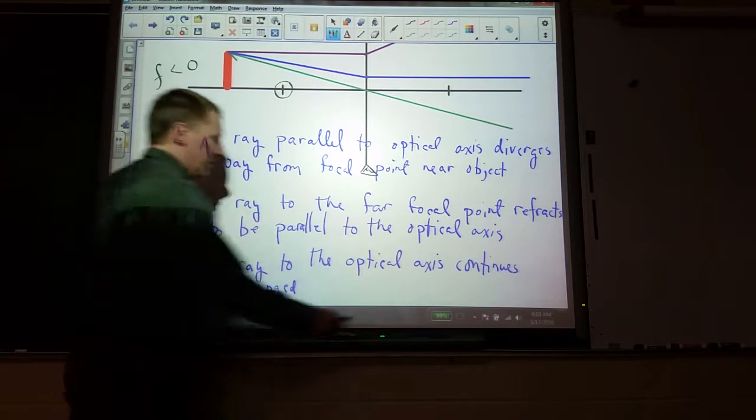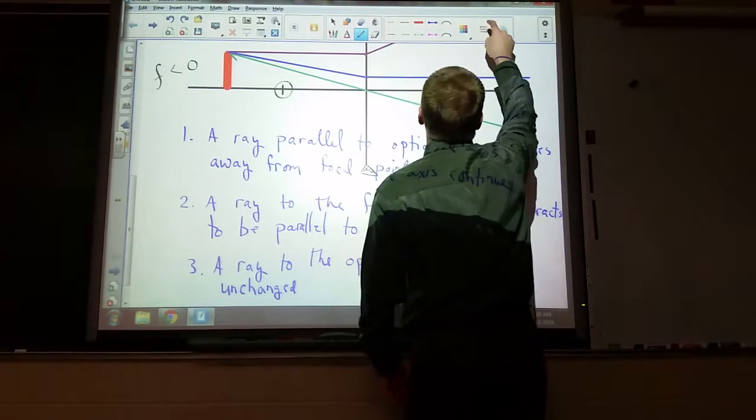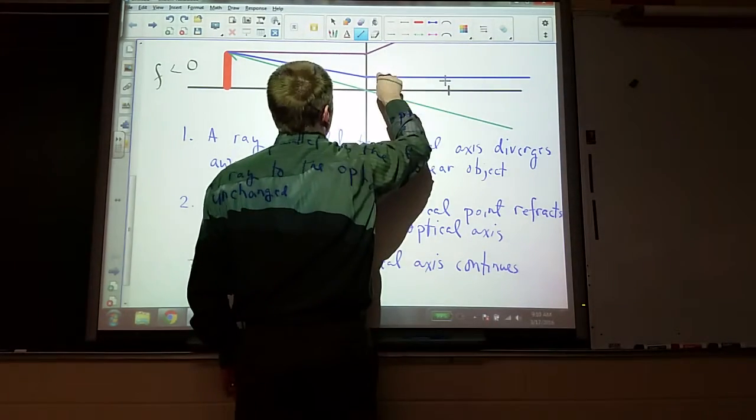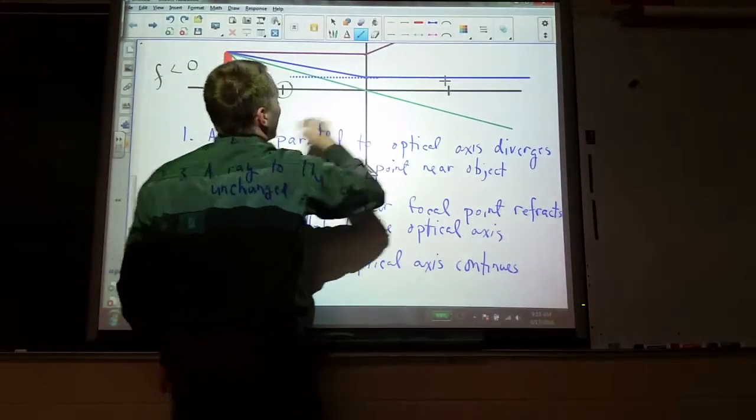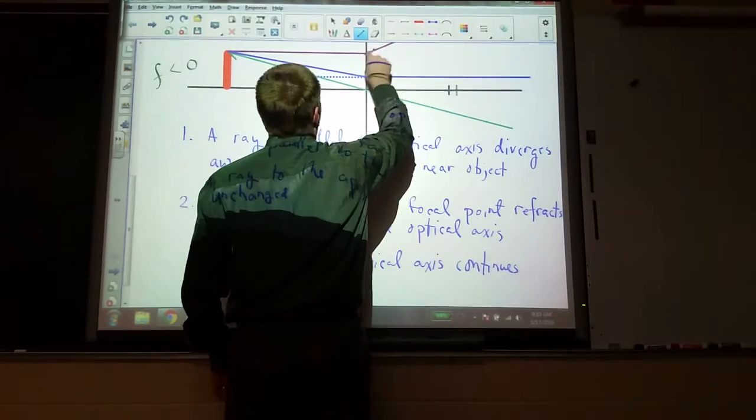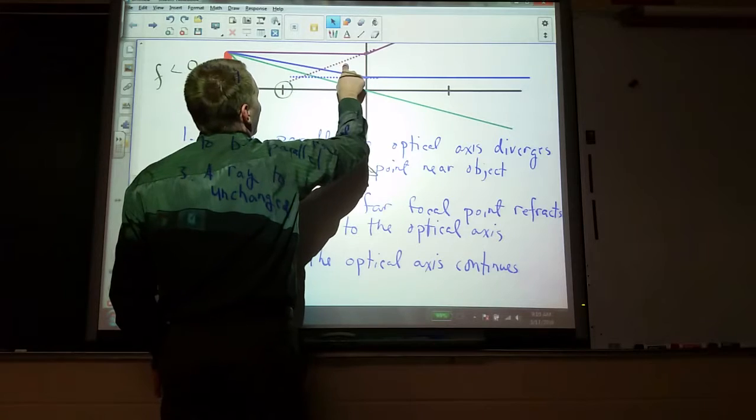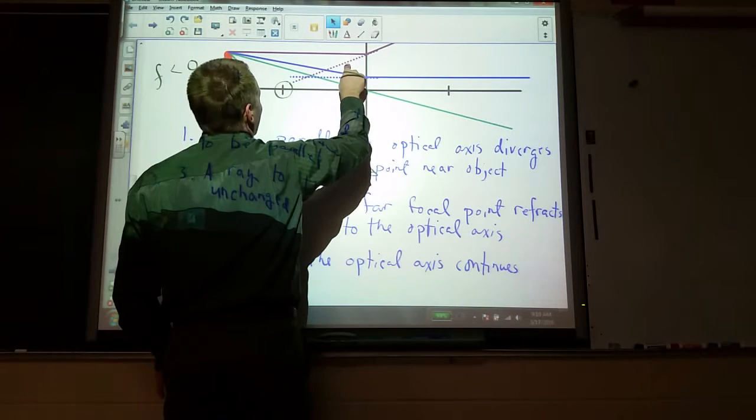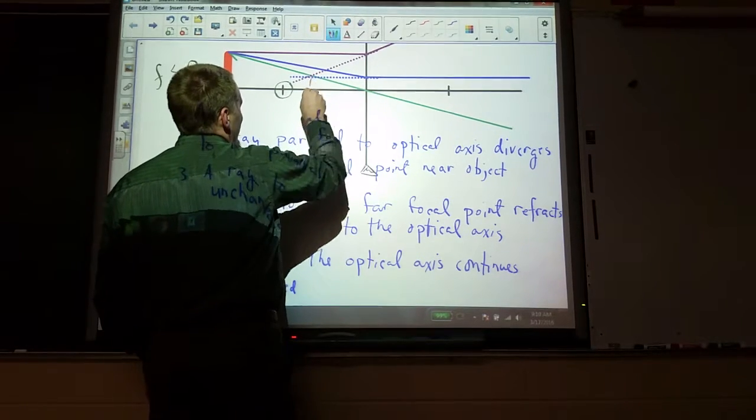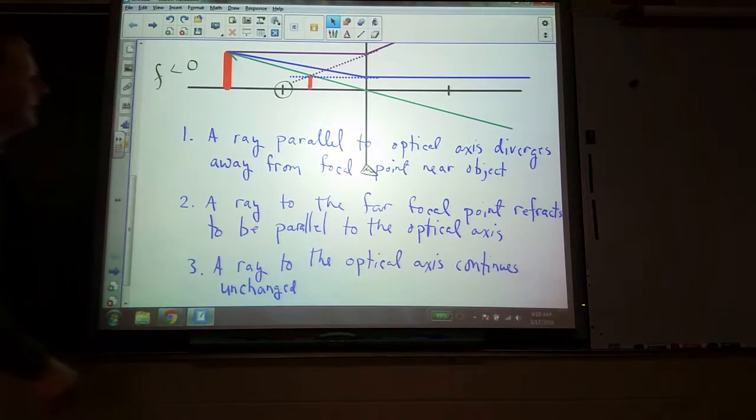So what do we do? It'll be a virtual image. And we extend these backwards, just like we've done with other ones. I'll take the blue, extend it straight back. And then I'll take the purple, extend it straight back. And where they meet is where our image forms.